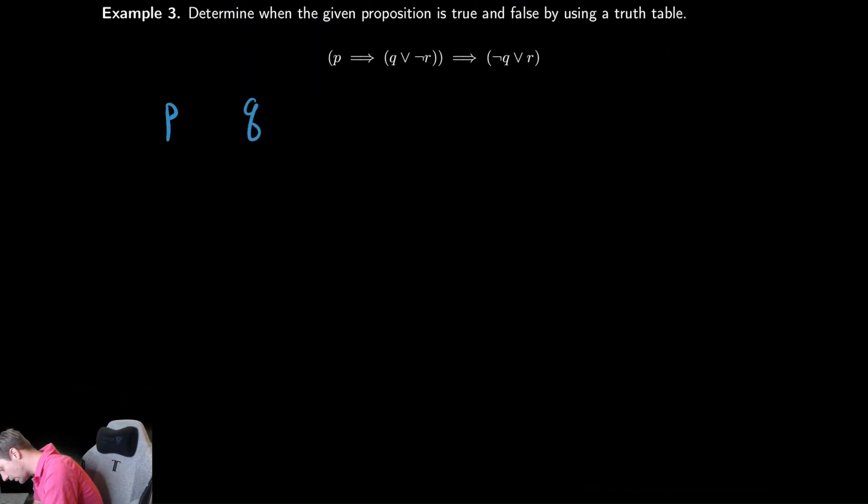Let's set up our table the same way we did before. We have P, Q, and R. We're going to have four trues followed by four falses, and then a repeating pattern of two trues followed by two falses.